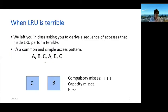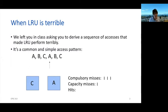Then we move to the next item and it's A — I just kicked that out. What do I do? I look back in time: B needs to get kicked out. So I kick out B, I put in A, and that's actually a capacity miss, because if my cache were larger, A would still have been in there.